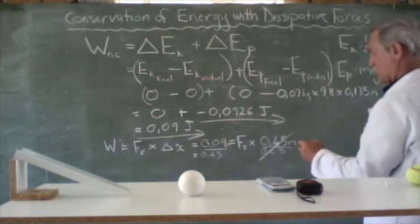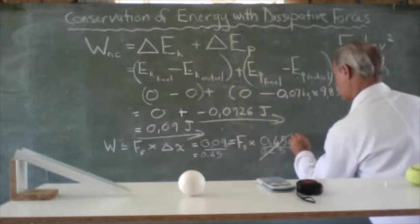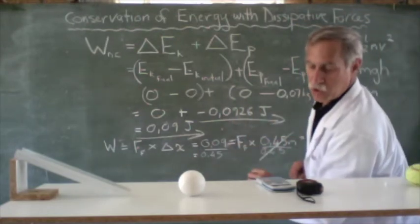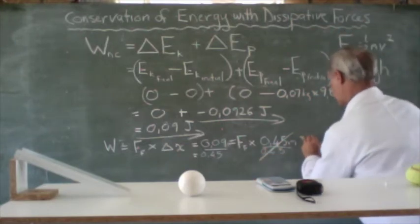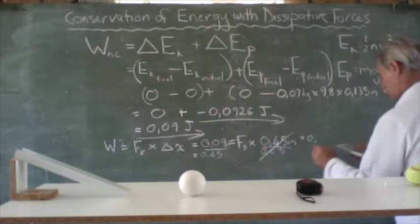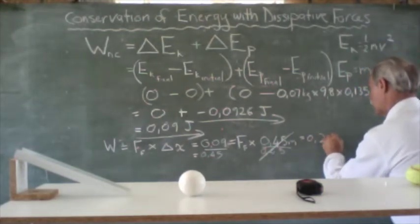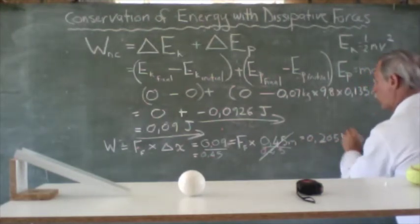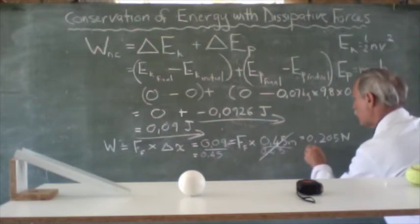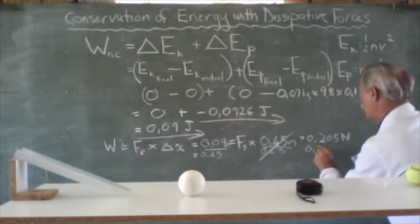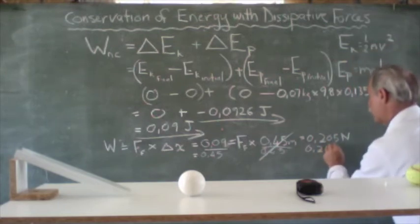and frictional force is equal to 0.09 divided by 0.45 equals a force of 0.205 newtons. Or, if we were to round it off to two decimal places, 0.21 newtons.